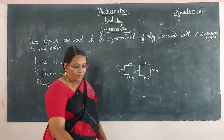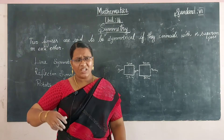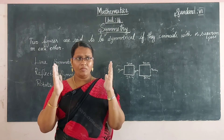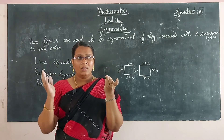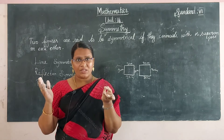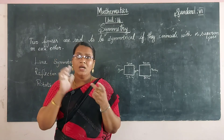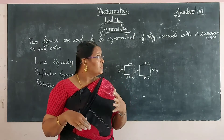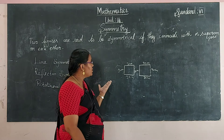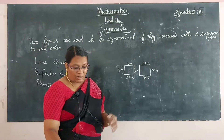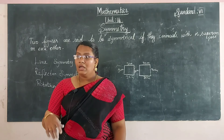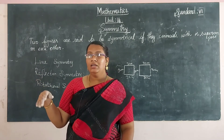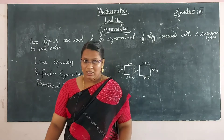Inside our body we have symmetrical shapes. The kidneys have the same shape and same size. In our skull also, having the same shape. These are examples of symmetry. And in our classroom, all the benches have the same shape and same size — these are also examples of symmetry.